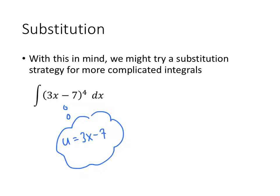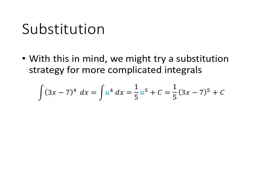If we do that substitution, we get what appears to be a much simpler-looking integral, u to the fourth, rather than that complicated 3x minus 7 to the fourth. Continuing in this way, it looks like we get an answer of one-fifth times 3x minus 7 to the fifth, plus c.